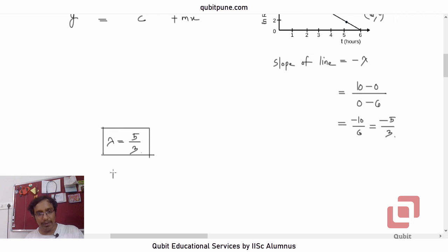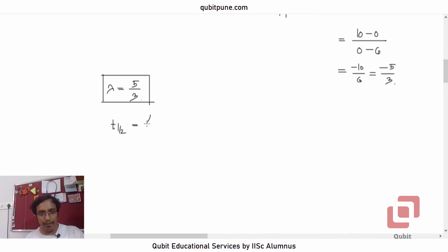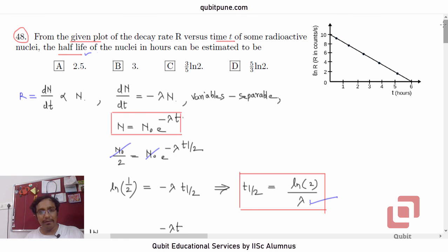Now, if lambda is 5 by 3, what is half-life? Half-life is ln 2 by lambda or 3 by 5 ln 2. 3 by 5 ln 2 is option C. So question number 48, option C.